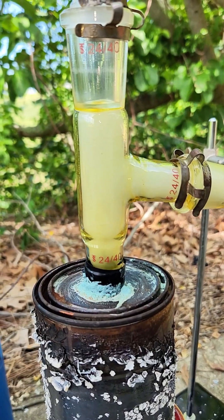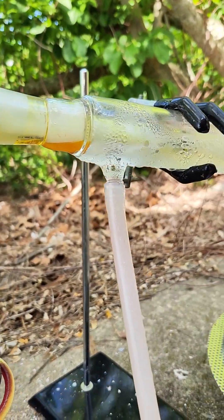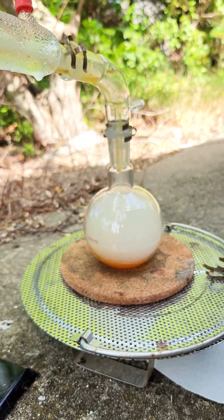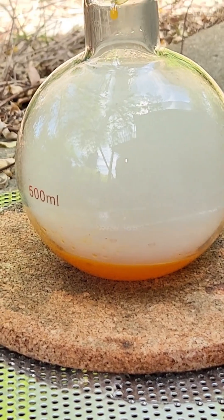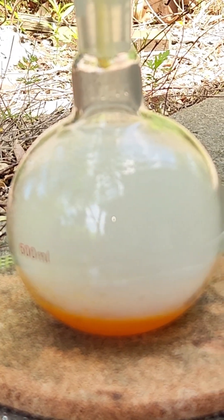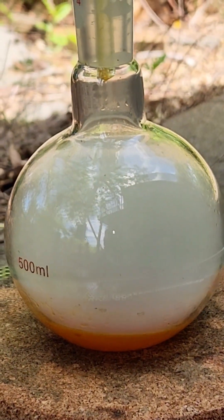as the reaction heats up, the sodium benzoate and sodium hydroxide react to form sodium carbonate and free benzene. The benzene distills over as this yellow liquid along with a lot of water vapor that was present in the reactants.